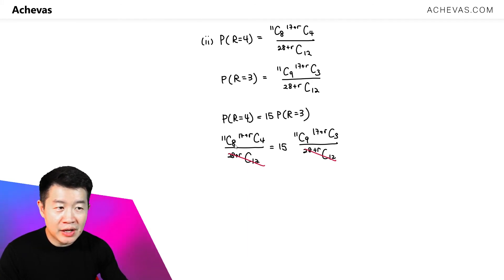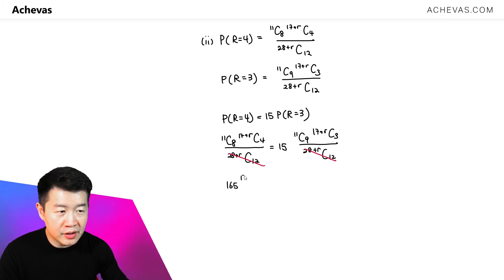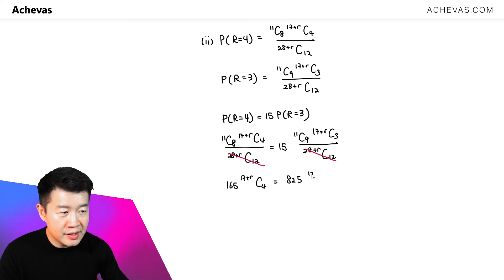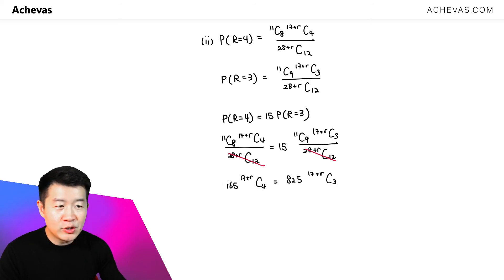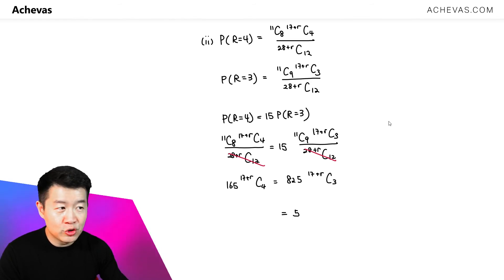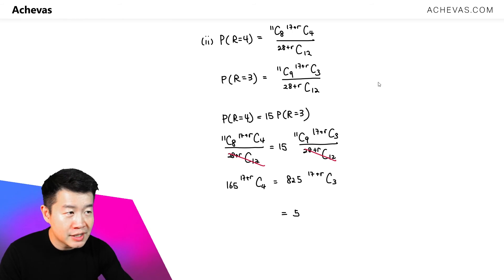Pressing the calculator for 11C8, that gives 165, and we have (17+R)C4. Then 15 multiplied by 11C9 gives 825, and we have (17+R)C3 on that side. So 825 divided by 165 is 5. For (17+R)C4 and (17+R)C3, I will make use of the combination formula from my formula sheet.